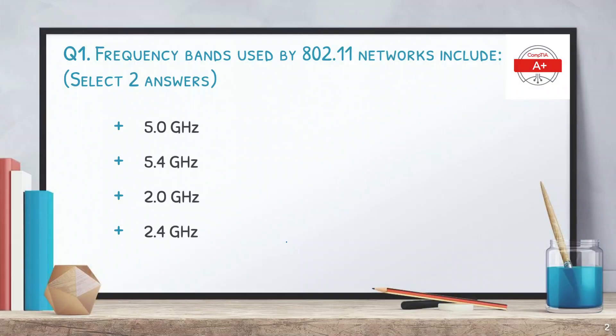Question 1: The frequency bands used by 802.11 networks include — select 2 answers. The options are 5.0 GHz, 5.4 GHz, 2.0 GHz, and 2.4 GHz. The correct answers are 5.0 GHz and 2.4 GHz. These are the frequency bands usually associated with wireless access points or the Wi-Fi we use in our homes.